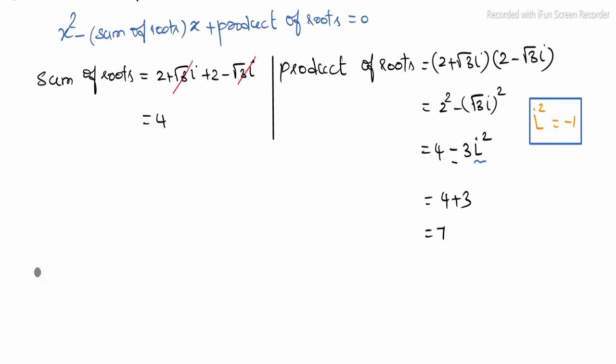We've found the sum of roots and product of roots. Hence, the polynomial equation of minimum degree with rational coefficients...